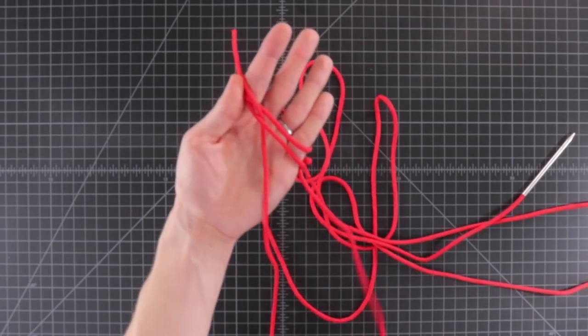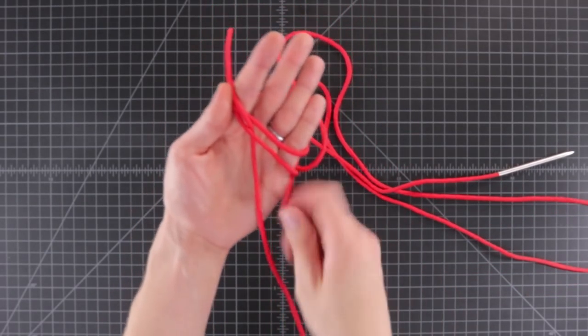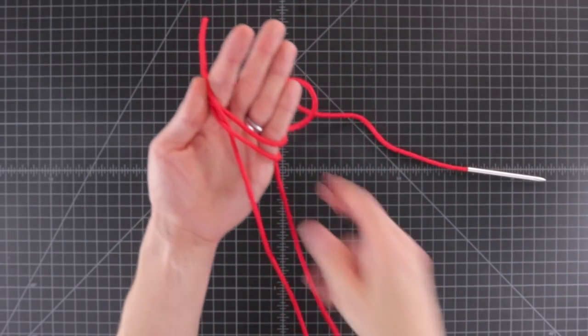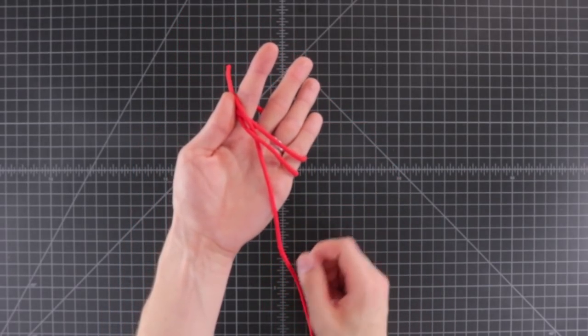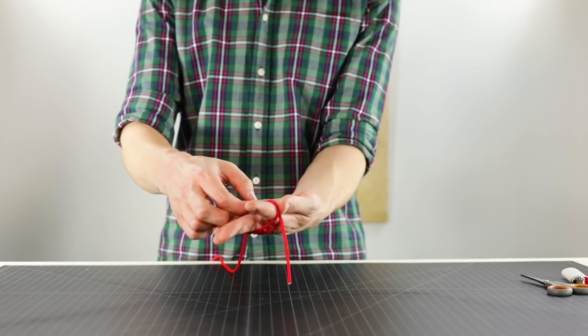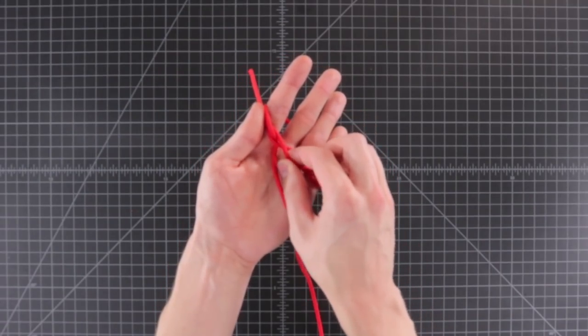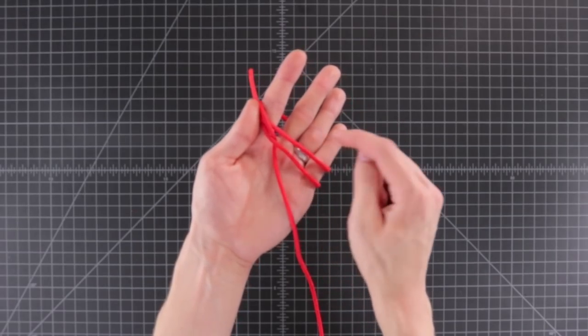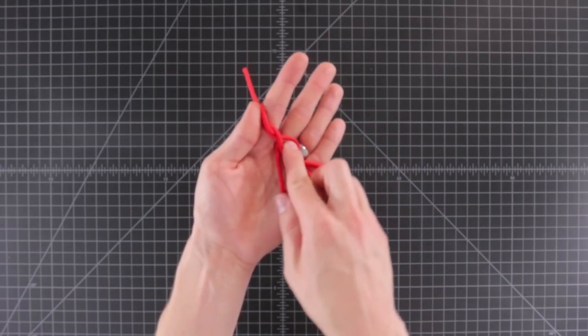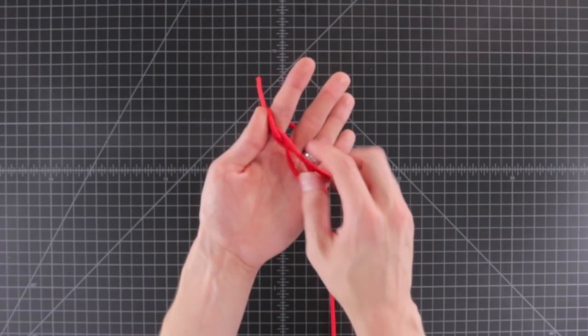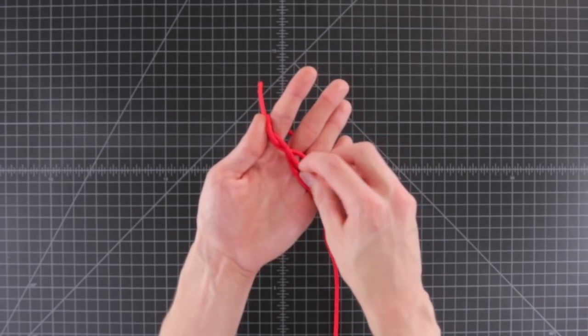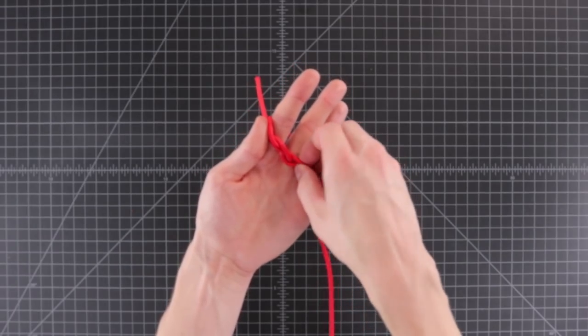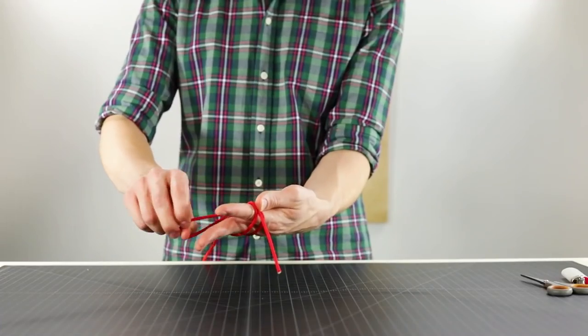Pull all your slack through. So now it's on the left side. We're gonna be crossing these two cords with the left one going underneath. Then we're gonna be going over that first cord and under that second cord again. Over under and pull your slack through.